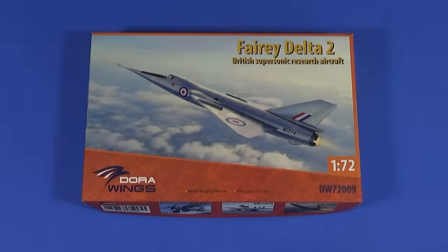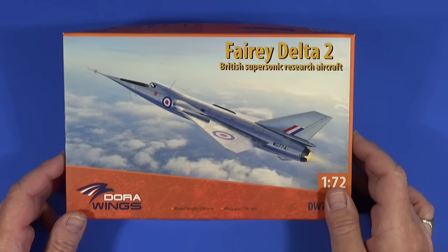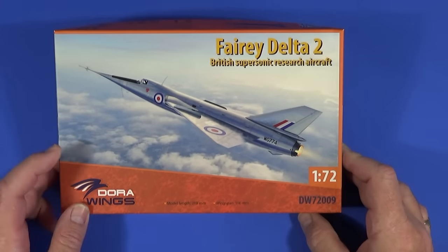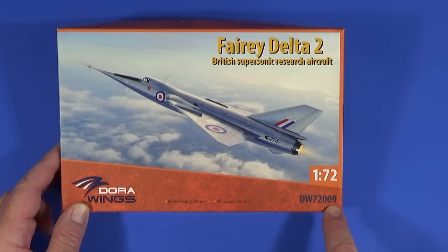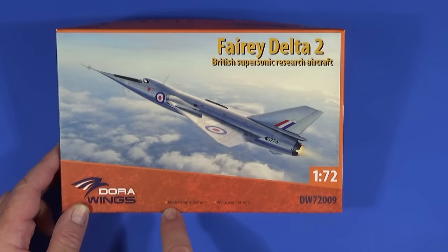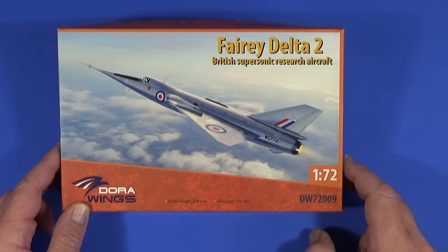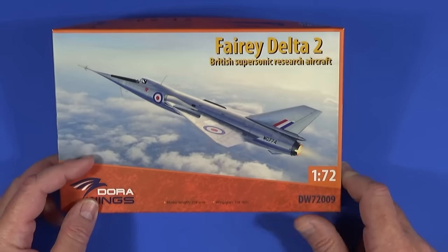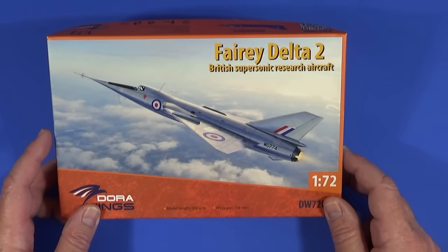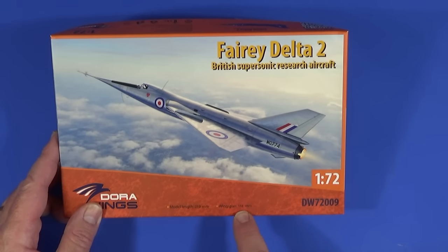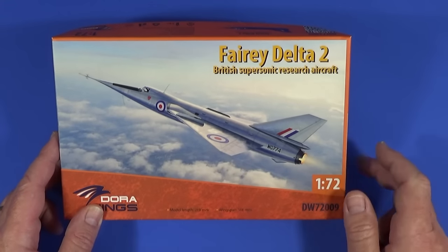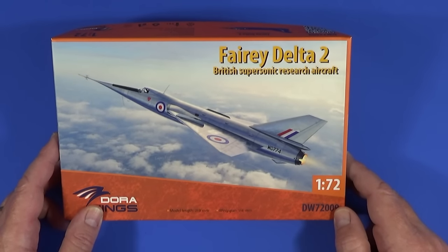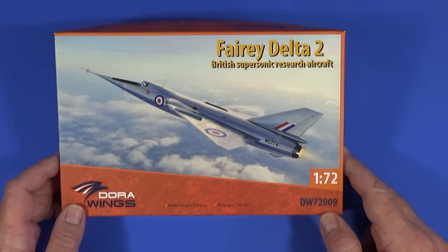Let's have a look at the box. Here we have the box of the Fairey Delta 2 from Dora Wings in 1/72nd scale. Scale is confirmed here and it has a product code DW72009. When it's complete, the model will be 219 millimeters long, that's about 21 centimeters or about eight inches in old money, and a wingspan of 114 millimeters. The artwork's very beautiful, depicting the FD2 during its attempt on the world airspeed record, which of course it very successfully gained.